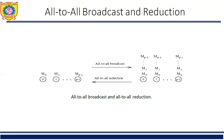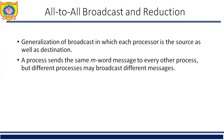One way to perform an all-to-all broadcast is to perform P one-to-all broadcasts, one starting at each node. If performed naively on some architectures, this approach may take up to P times as long as a one-to-all broadcast. It is possible to use communication links in the interconnection network more efficiently by performing all P one-to-all broadcasts simultaneously, so that all messages traversing the same path at the same time are concentrated into a single message whose size is the sum of the sizes of individual messages.